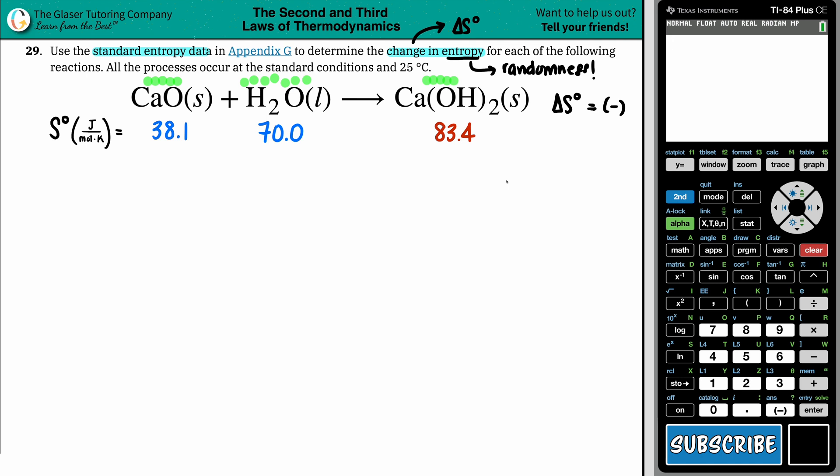What's the formula that we're going to use? It's this one right here. Delta S for your entire reaction is equal to the sum, that's the symbol, so the sum, aka addition, of all of your products, so the right side, minus the sum of all your reactants. Pretty simple enough. Products minus reactants.